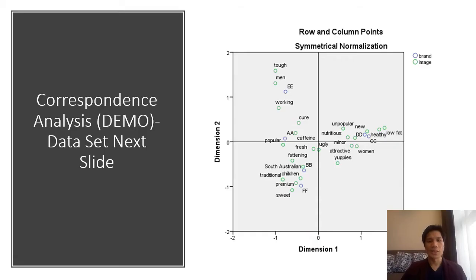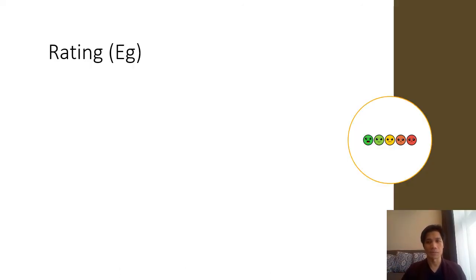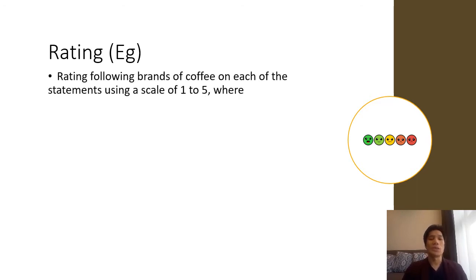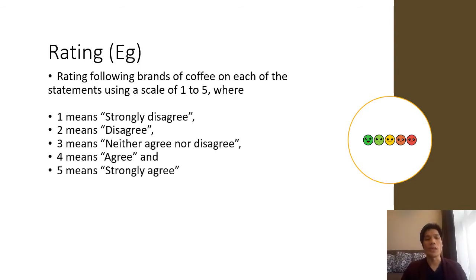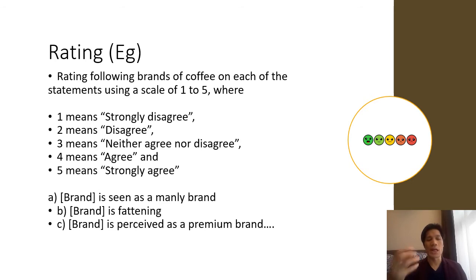I'm going to show you a demonstration in SPSS on how to do correspondence analysis using the dataset we're going to see in the next slide. The context we're looking at today is doing a rating on coffee brands using statements on a scale of one to five, where one equals strongly disagree and five equals strongly agree. Keeping the brand in mind, each brand has to be answered on this set of attributes. For example, if the first brand is AA, then respondents answer: AA is seen as a Manly Brand, AA is seen as Fattening, AA is perceived as a Premium Brand, and so on for each brand.